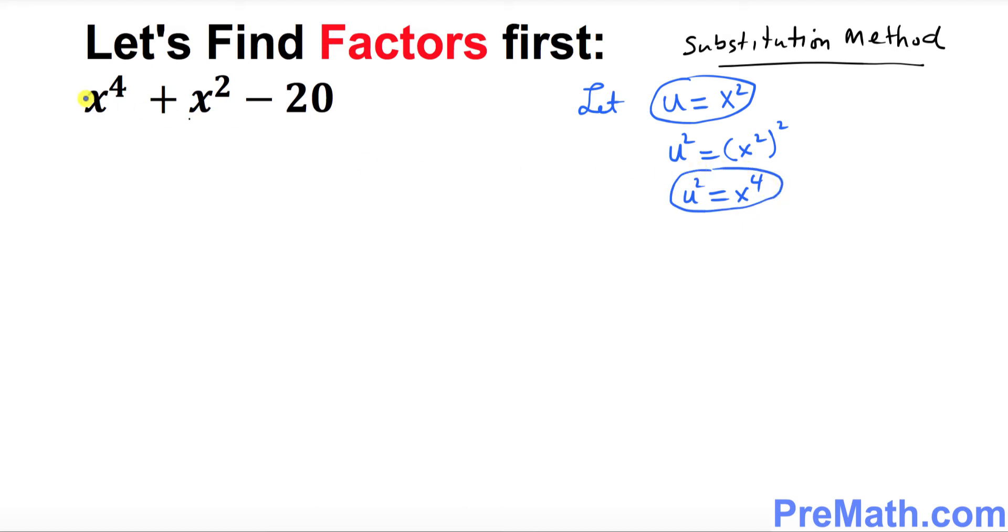So let's go back to this expression over here. So x power 4 could be written as u square and plus x square could be written as u and minus 20. Now as you can see this become a lot simpler quadratic expression. Let's go ahead and find the factors. What are the possible factors? The possible factors are u minus 4 and u plus 5.